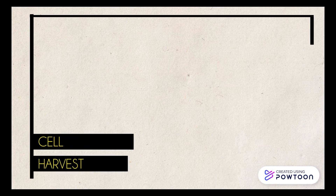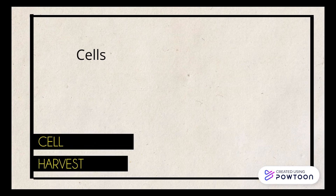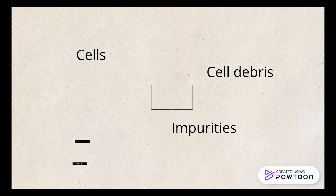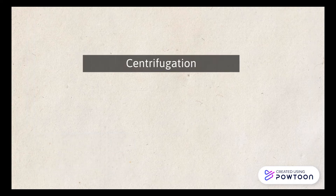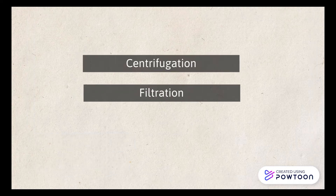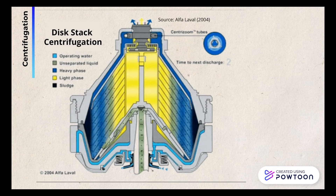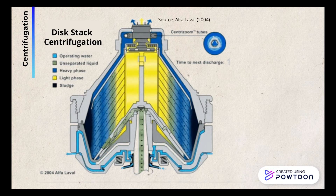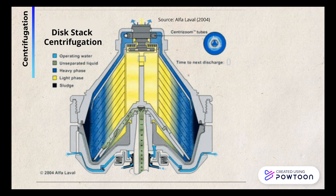During cell harvest, suspended matter such as cells, cell debris, and impurities are removed. This is done through centrifugation followed by filtration. Centrifugation is commonly done using a vertically mounted disc stack design.